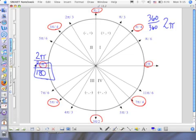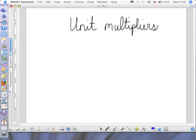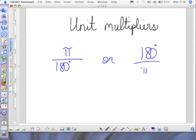One pi radians is the same thing as 180 degrees. So, when we are converting, our unit multiplier for converting back and forth is either this or this.